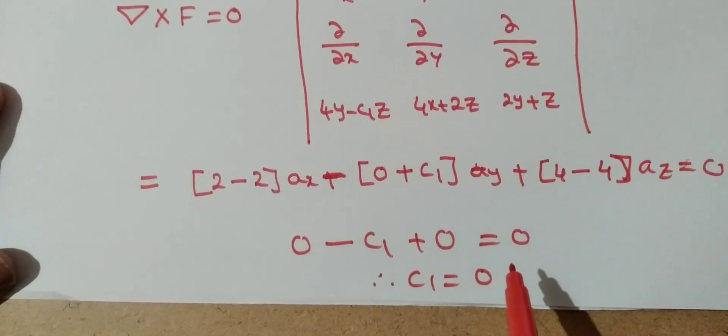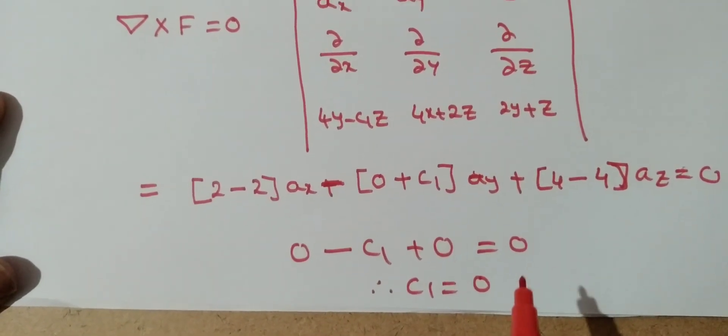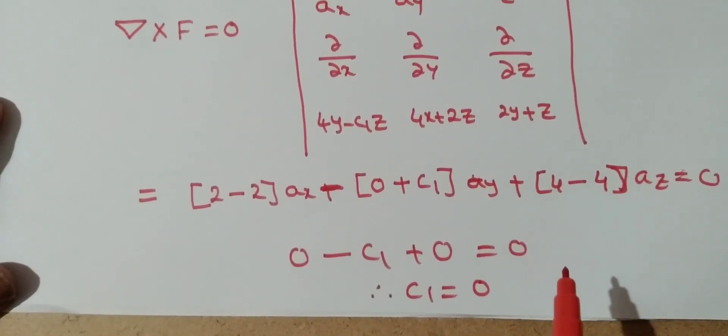Remember students, if a vector is irrotational, it means the curl of that vector equals 0. Thank you.